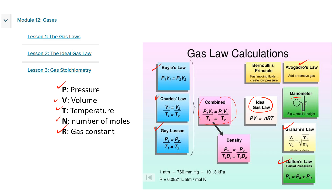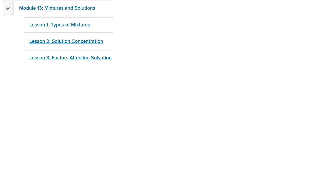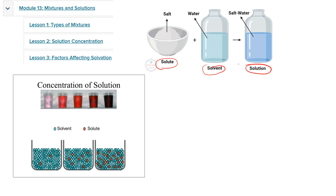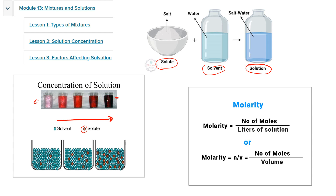We covered all of these calculations in grade 10 advanced regarding gases — we are not going to use them in grade 12 advanced, but maybe we can relate some of the concepts to the curriculum. Then in module 13, the last module of grade 10 advanced, we covered mixtures and solutions. If you have a solute and a solvent and you mix them, you get a solution. We covered the concentration of a solution — the more solute you have, the higher the concentration becomes.